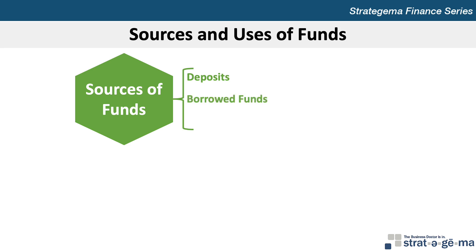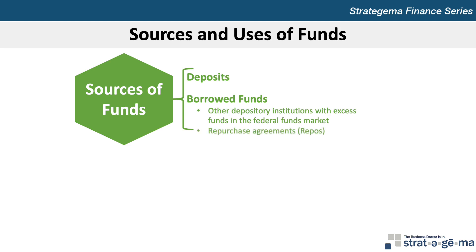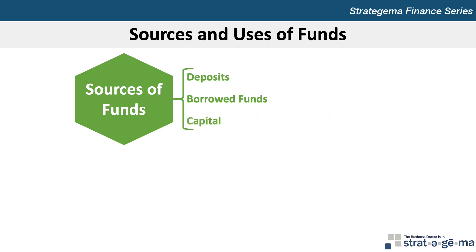When SIs are unable to attract sufficient deposits, they can borrow on a short-term basis from three sources: other depository institutions that have excess funds in the federal funds market, through repurchase agreements or repos, or from the Federal Reserve. The capital or net worth of an SI is commonly used to support ongoing or expanding operations and is primarily composed of retained earnings and funds obtained from issuing stock.